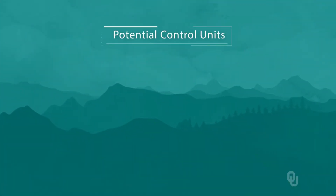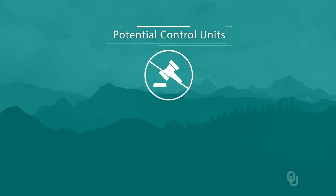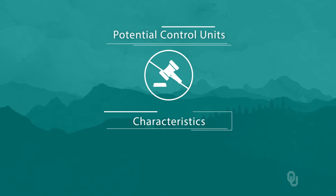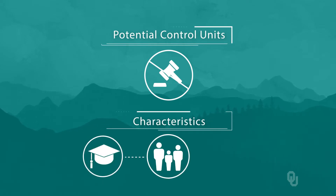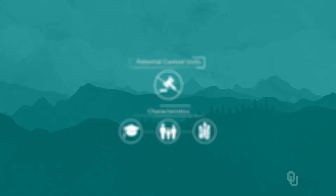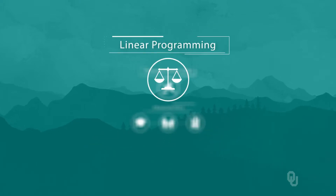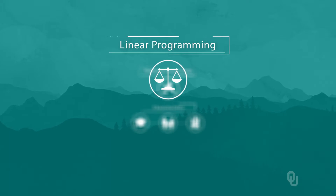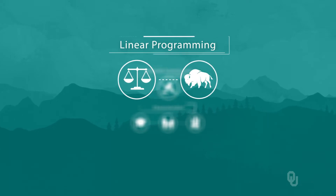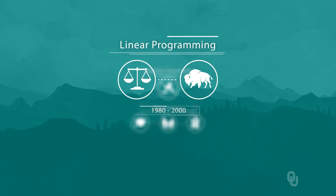Suppose we want to estimate the effect of Oklahoma's 2001 right-to-work law on state output via synthetic control. We would first choose a set of potential control units. In our example, states without right-to-work laws would be a good choice. Then we would choose a set of characteristics that we think affect state output — for example, education levels, population density, and investment. Then the method uses linear programming to choose a weighted average of some of the potential control units to create a synthetic Oklahoma from, say, 1980 to 2000, the year before the law passed.